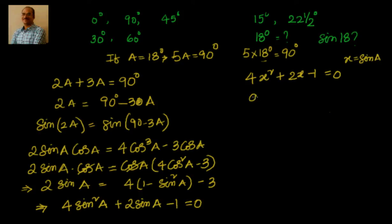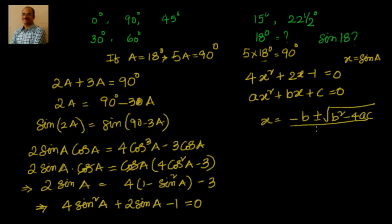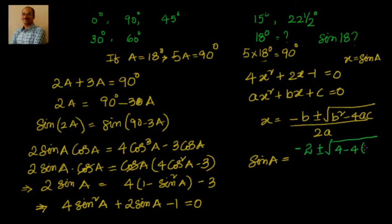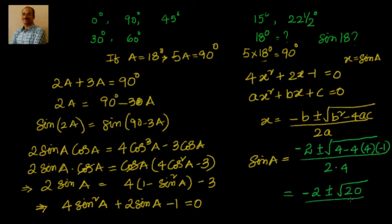This is of the form 4x² plus 2x minus 1 equals 0, where x equals sin(a). Using the quadratic formula x equals minus b plus or minus square root of (b² minus 4ac) divided by 2a. Substituting: sin(a) equals minus 2 plus or minus square root of (4 minus 4 times 4 times minus 1) divided by 8, which gives minus 2 plus or minus root of 20, divided by 8.